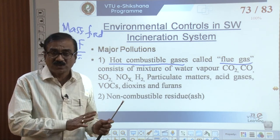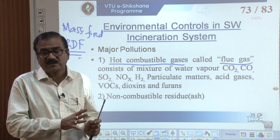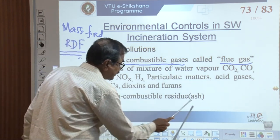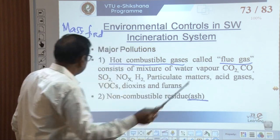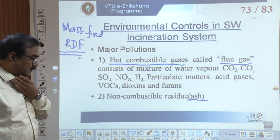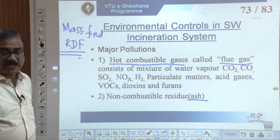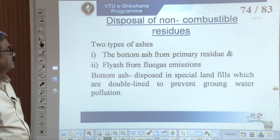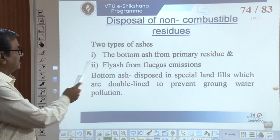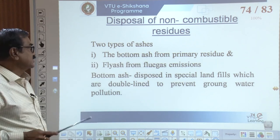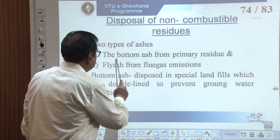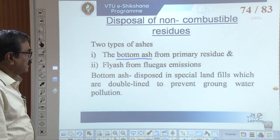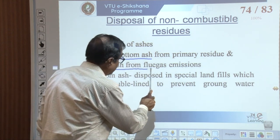This level of pollutant complexity is not the case with the refuse derived fuel incinerator. The second major pollutant is non-combustible residue — that is ash. These two are the major outputs which we have to handle in a municipal incinerator. There are two types of ash: one coming from the bottom — the primary residue — and the other is fly ash coming from the flue gases.